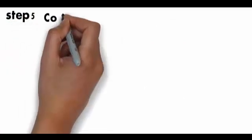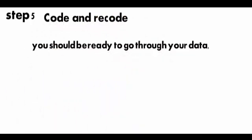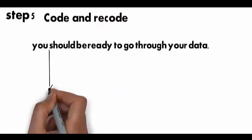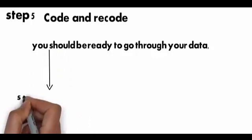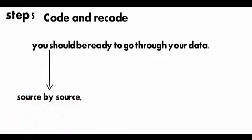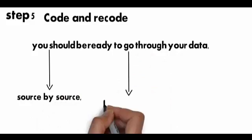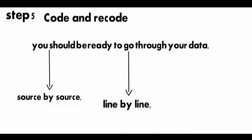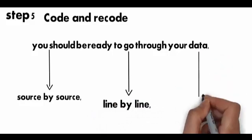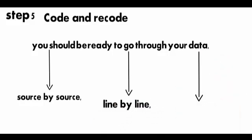Step 5: code and recode. Now you should be ready to go through your data source by source, line by line, and reduce it into meaningful codes. You should expect this to take some time, for example, as much as 1 to 4 hours for every hour of collected and transcribed interviews.